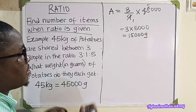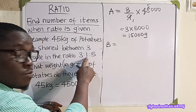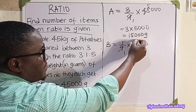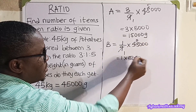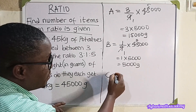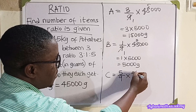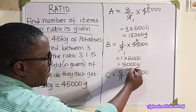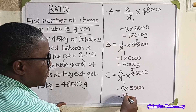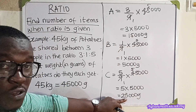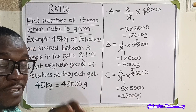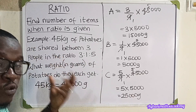Person B's ratio is 1. So 1 over 9 multiplied by 45,000 gives 1 multiplied by 5,000 equals 5,000 grams. Person B got 5,000 grams. For person C, the ratio is 5. So 5 over 9 multiplied by 45,000 gives 5 multiplied by 5,000 equals 25,000 grams. Person C got 25,000 grams. This is a simple way of finding the quantity for each individual when the ratio and total quantity are given.